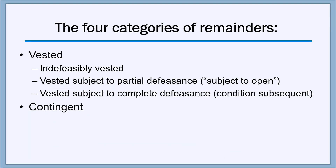If that seemed like too much information, here's a simplified version. There are four categories of remainders: three are vested and one is contingent. The vested remainders are: indefeasibly vested; vested subject to partial defeasance — that's the class gift subject to open; and vested subject to complete defeasance — that's the one with a condition subsequent. Those are the four categories of remainders — good to remember on an exam.